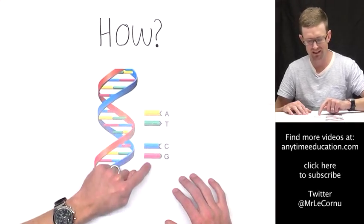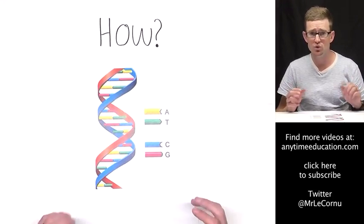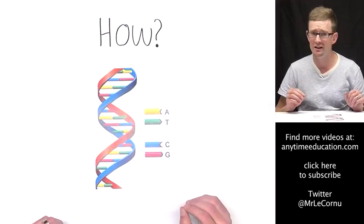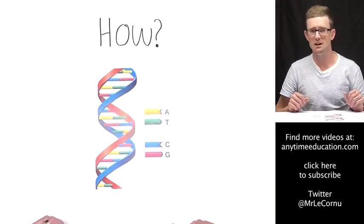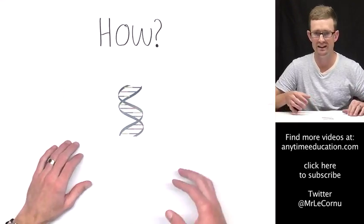And complementary base pairing occurs - complementary base pairing between A and T and between C and G. Well, that complementary base pairing is a vital component and a critical mechanism in how DNA replication takes place.